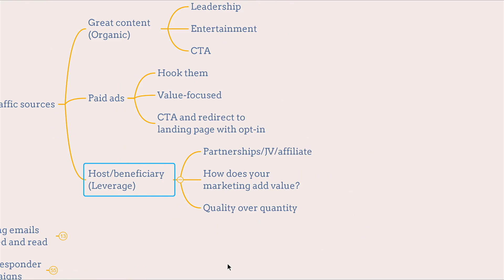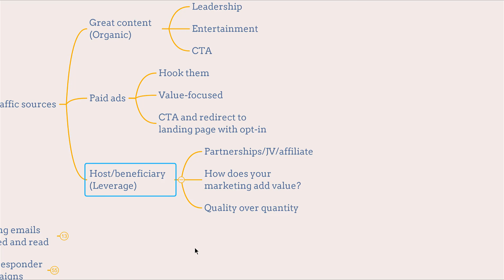Another smart thing you can do is take advantage and leverage of host-and-beneficial relationships through either partnership, joint venturing, or affiliate arrangements. When it comes to getting a partnership, think about how your marketing adds value to their list as well. Remember: quality over quantity.